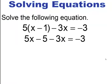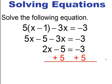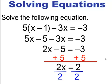Do the distributive property first, and always double-check that you multiplied all the way through. Then combine like terms: 5x minus 3x is 2x. Now you have a two-step equation — add 5 to both sides to be left with 2x equals 2, then divide through by 2 to get x equals 1.